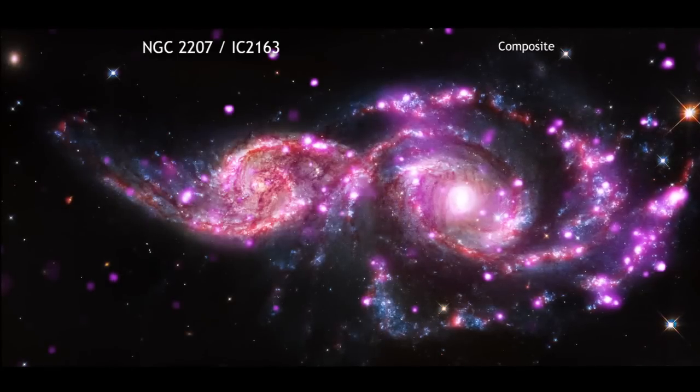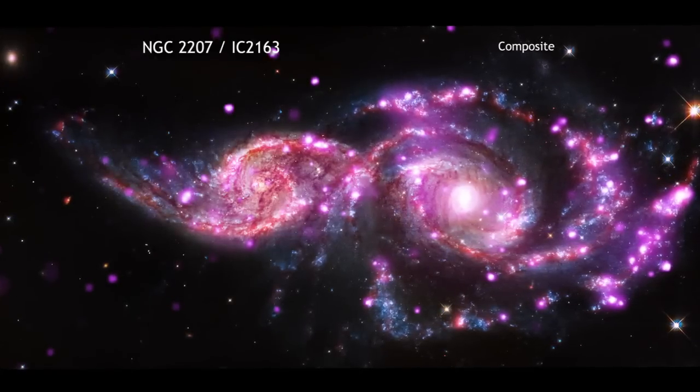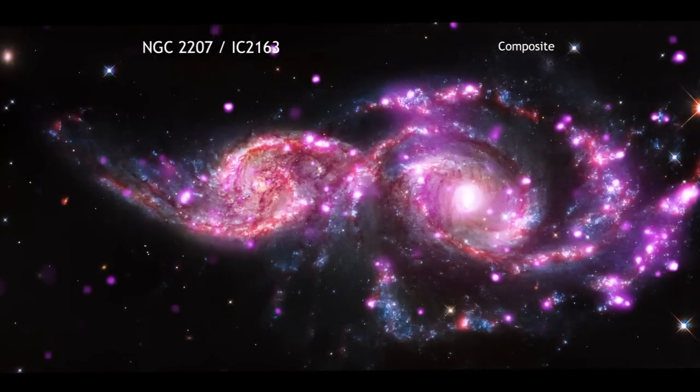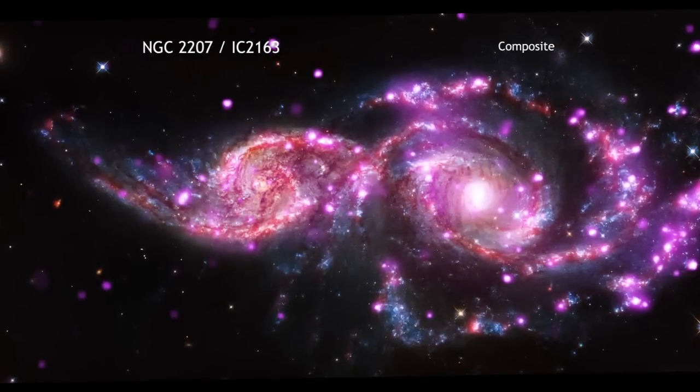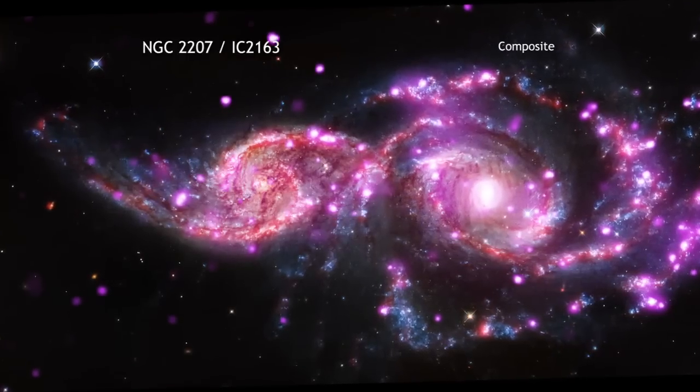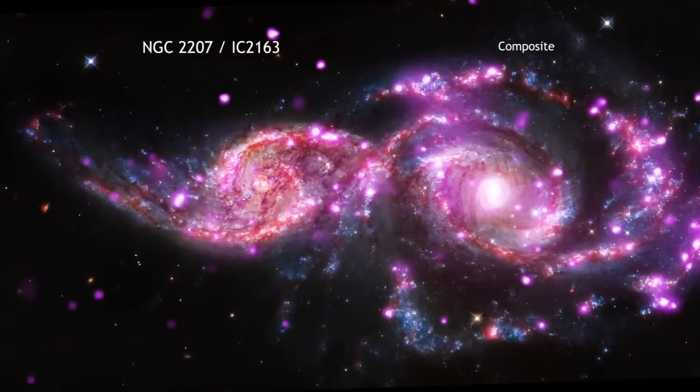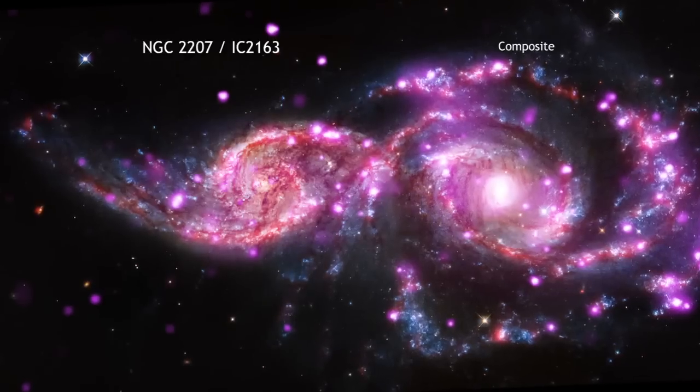At this time of year, there are lots of gatherings often decorated with festive lights. When galaxies get together, there is also the chance of a spectacular light show. Take, for example, NGC 2207 and IC 2163.